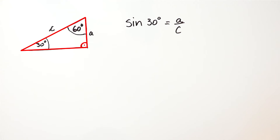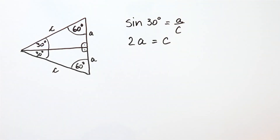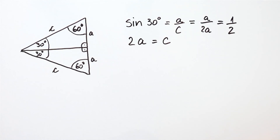We started with the right triangle whose one acute angle was equal to 30 degrees. Since the sum of angles of a triangle is 180 degrees, then the other acute angle was 60 degrees. Then we drew another such triangle on the opposite side, which gave us a triangle with each angle equal to 60 degrees — that is, an equilateral triangle. That is how we concluded that the hypotenuse c is twice the length of the leg a, which means that the sine of 30 degrees is equal to 1 over 2.